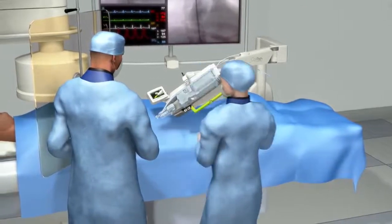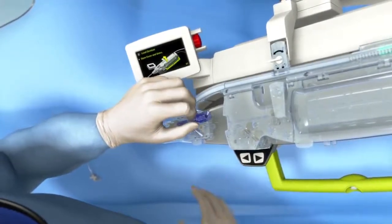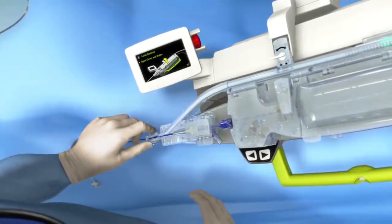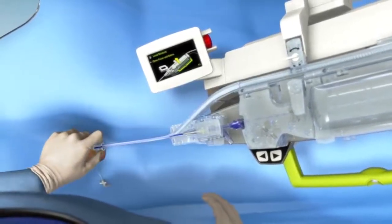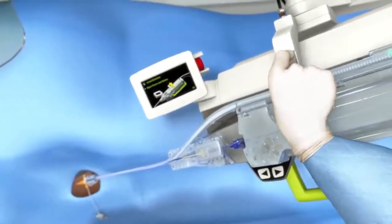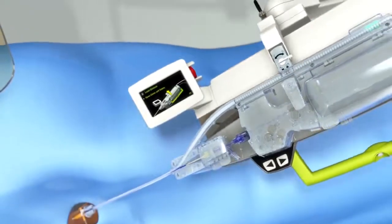The physician loads the guide catheter into the single-use cassette using the fine-tuned controls on the robotic drive. With the guide catheter securely in place within the cassette, the physician pulls the guide support track over the guide catheter, securely attaching it to the introducer sheath. This guide support track supports the guide catheter as it is being advanced and retracted within the patient's anatomy.